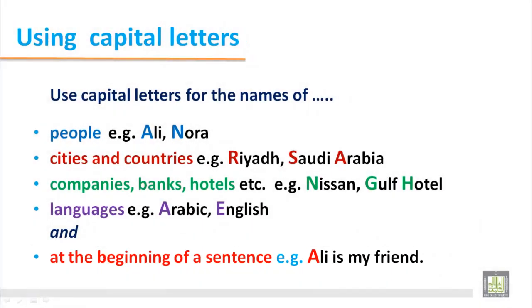Here we see the name of a person — Ali — where 'A' is capital, and another name, Nora, where 'N' is capital. For cities and countries: Riyadh, where 'R' is capital; Saudi Arabia, where 'S' is capital for Saudi and 'A' is capital for Arabia.